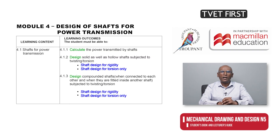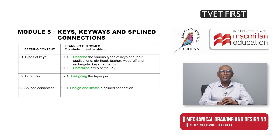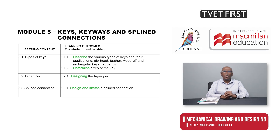The former Module 4 on shafts has been renamed Design of Shafts for Power Transmission. The new Module 4 starts with calculations of the power transmitted by shafts, then focuses on designing shafts for rigidity and for torsion only. The new Module 5 on keys, keyways, taper pin and splined connections corresponds to the former Module 3. Various types of keys are now specified and their applications are required, and their size also needs to be determined. Whereas the old module emphasized calculations of the length, width, thickness, etc. of the tapered and splined components, the new module rewords this as simply requiring their design.